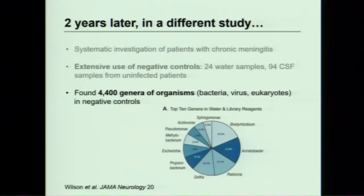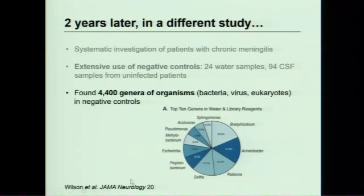Among the most common contaminants in negative controls: Propionibacterium — derived from patient skin; Escherichia — derived from reagents since E. coli is used to develop many enzymes; and Pseudomonas — found in many water sources. All of these could be plausible human pathogens, which really emphasizes the importance of understanding what's in your negative controls and whether what you're seeing is at a higher level than background.